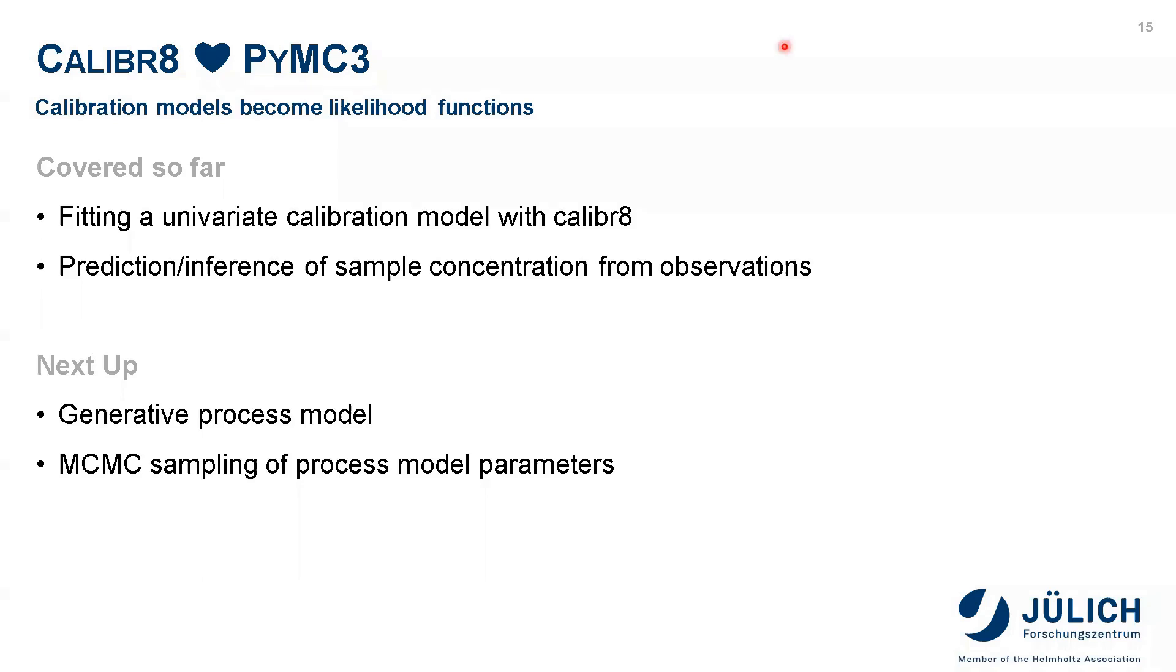So far, we saw how Calibrate error models make it easy to do univariate calibration while accounting for uncertainty. Prediction and inference of sample concentrations from single or multiple observations becomes a lot easier and more robust. Next, we will look into the coupling of Calibrate with PyMC3 to do Bayesian inference of process model parameters.